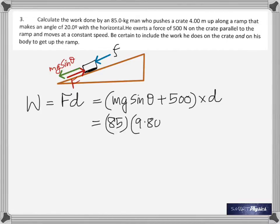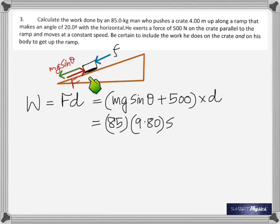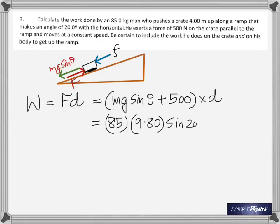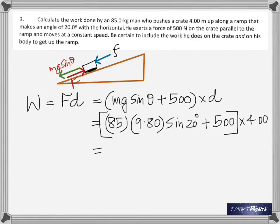He is pushing parallel to the ramp — not horizontal. The mg·cosθ component comes in only when finding the normal force. So: 85 times 9.8 times sin 20 — that's the weight component — plus 500 newtons times the 4-meter displacement.